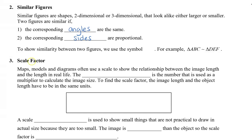To show similarity between figures we use the symbol that is like the squiggle. For example, we can say that triangle ABC is similar to triangle DEF, and you can see the similar symbol in between these two triangles.